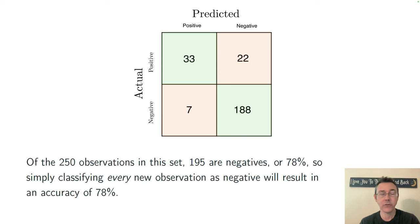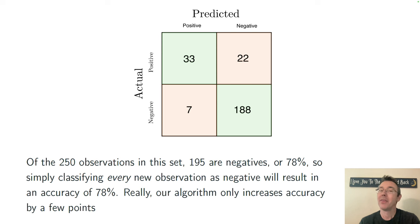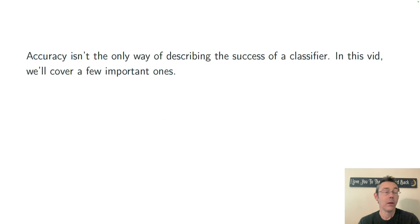If I apply that stupid algorithm to this data, let's see here, I have 195 total negatives, and that stupid classifier is going to get 188 of them right, 78%. So in comparison to the one that we are actually considering with this confusion matrix, which had an overall accuracy of 88.4%, this new algorithm is only doing a few points better.